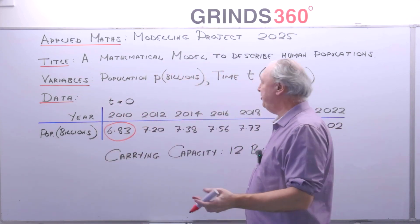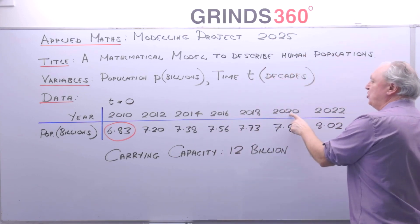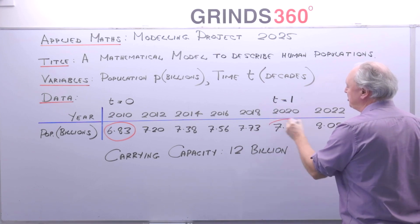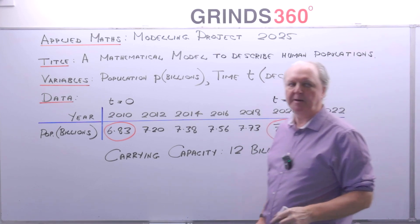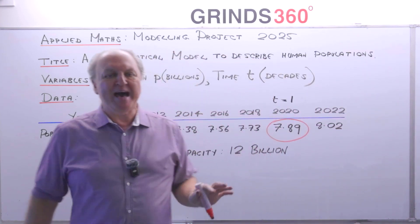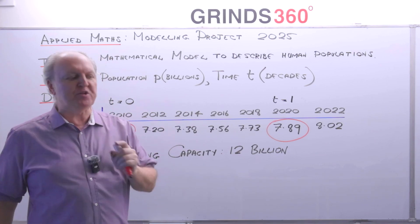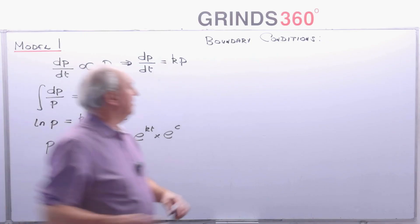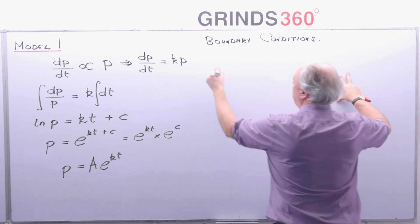And then one decade later, that's 2020, that's t is equal to one. You can now see the population is 7.89 billion. So we're going to use that information to find out my values of A and k.